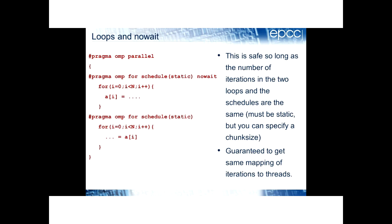The nowait clause on work-sharing directives suppresses the implied barrier at the end of the construct — in this case, the end of the loop. So if I have two loops and I consider that I don't need barrier synchronization between them, then I can put nowait on the first loop.